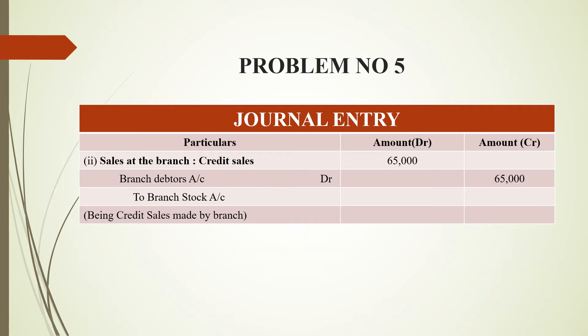The next transaction is credit sales. For credit sales, branch debtors account is debited as debtors are increasing, and branch stock account is credited as stock is going out at stock value. Cash has not come in, so branch debtors account is debited — 65,000 rupees. Narration: credit sales made by branch.